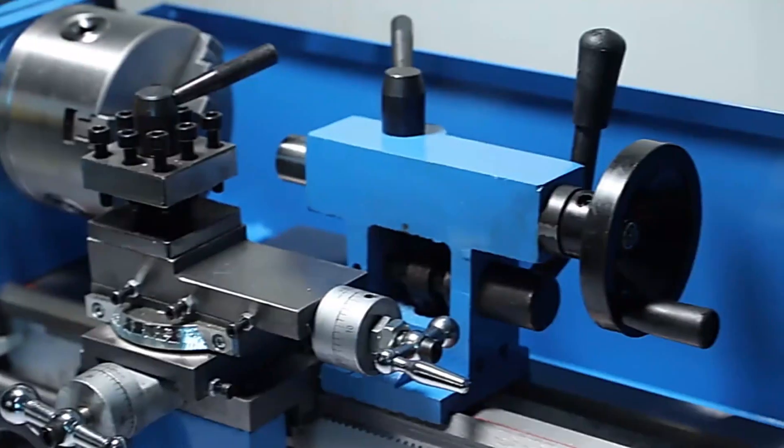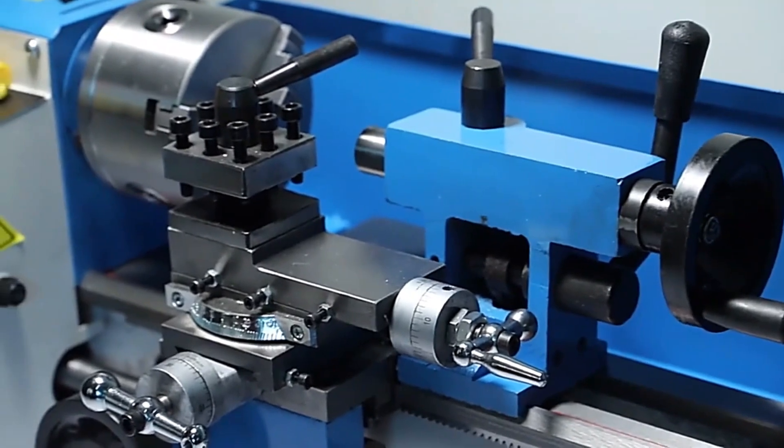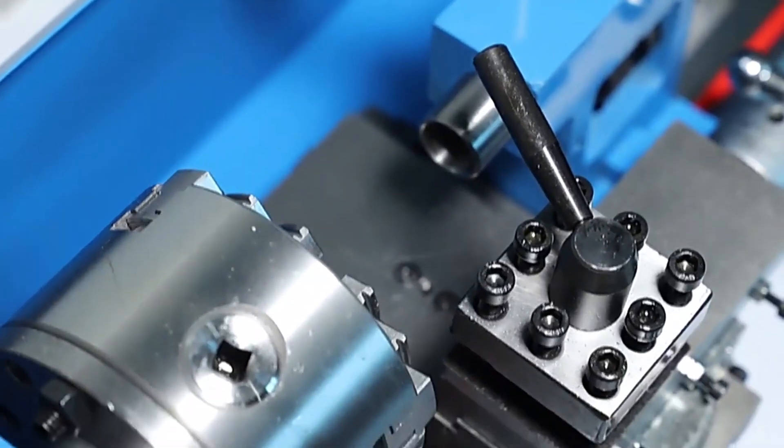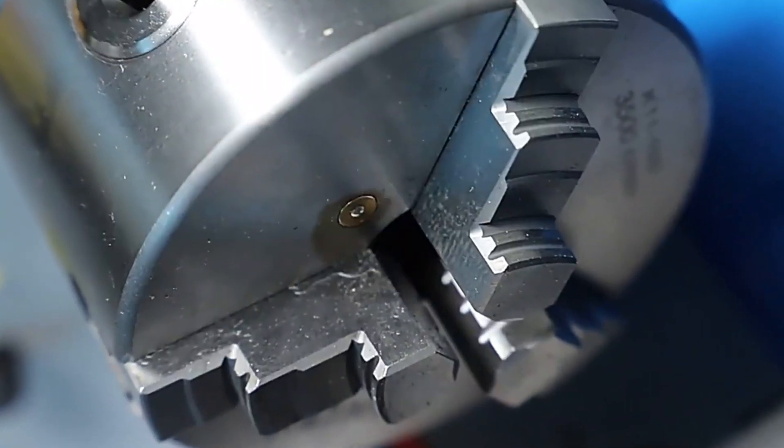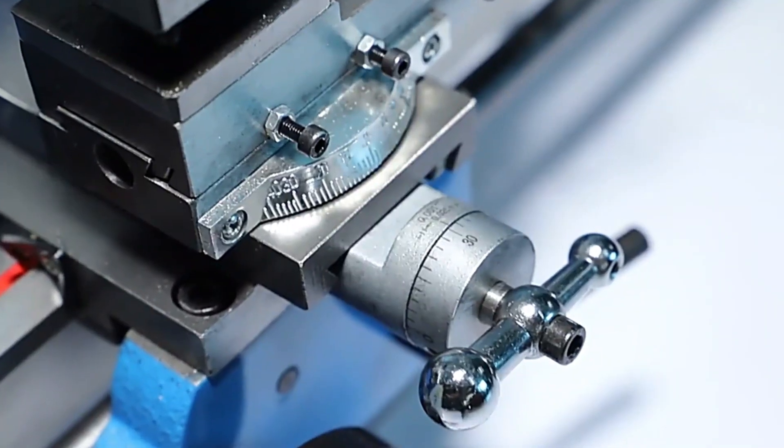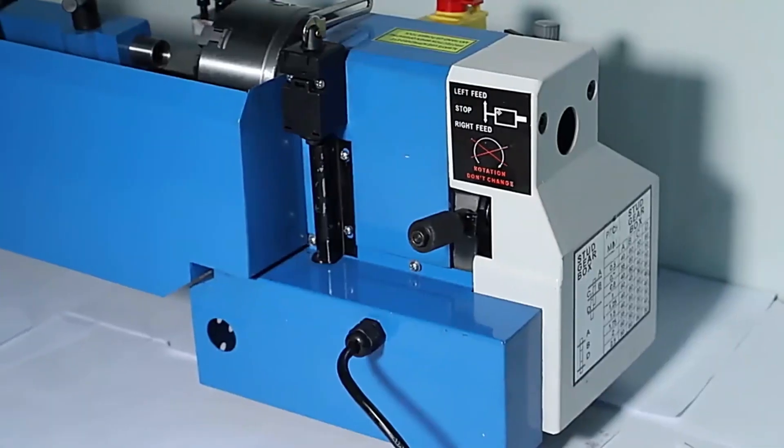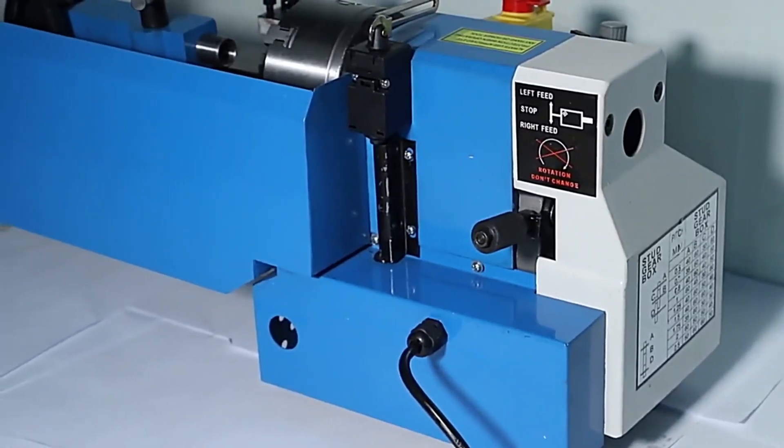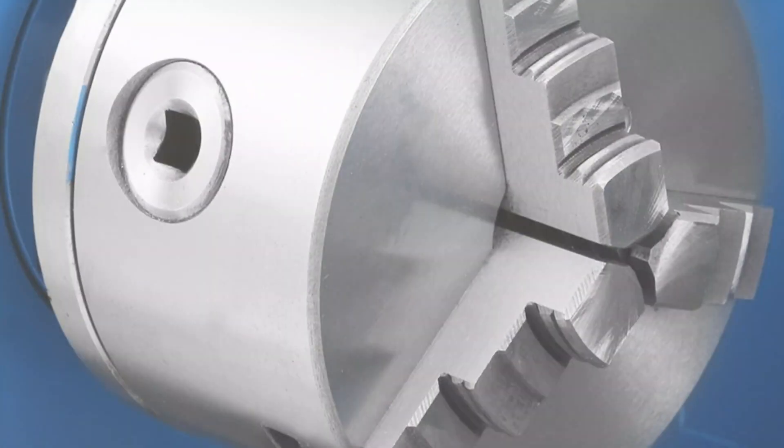The lathe also offers variable speed control, allowing for a wide range of tasks from delicate threading to high-speed turning. Its ample workspace of 180mm or 7.09 inches and chuck diameter of 100mm or 3.94 inches, provide flexibility for various sized projects. The lathe's optimal center distance of 350mm or 13.78 inches ensures easy work on longer workpieces.